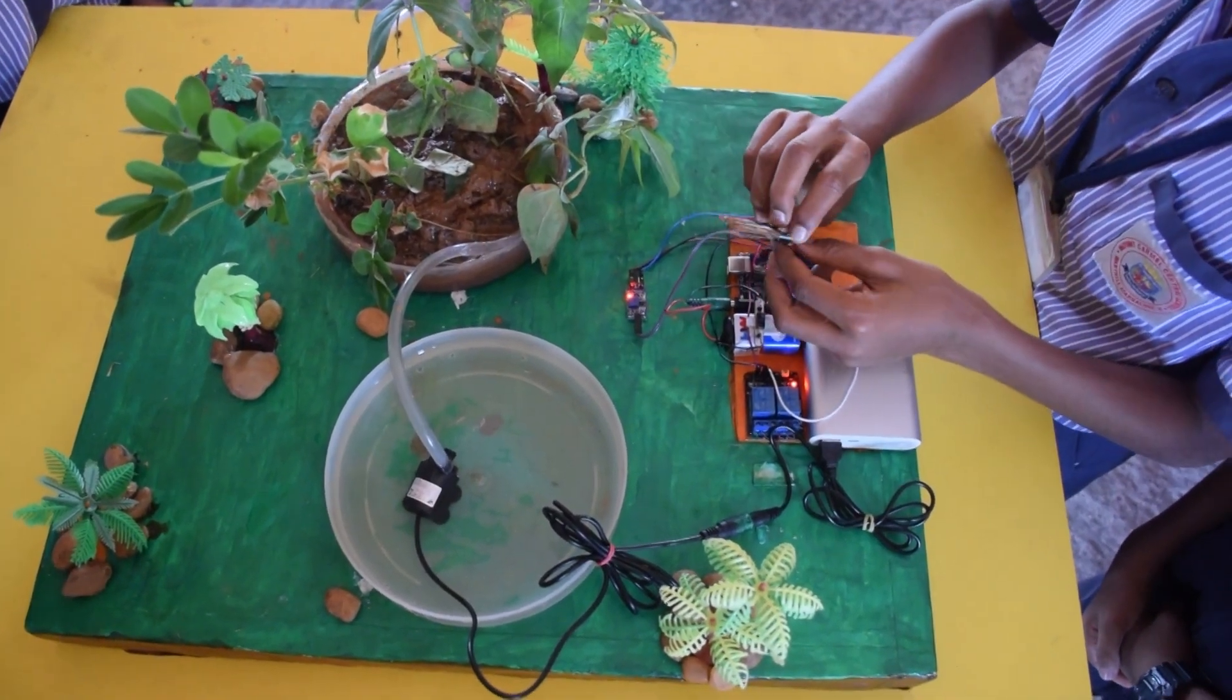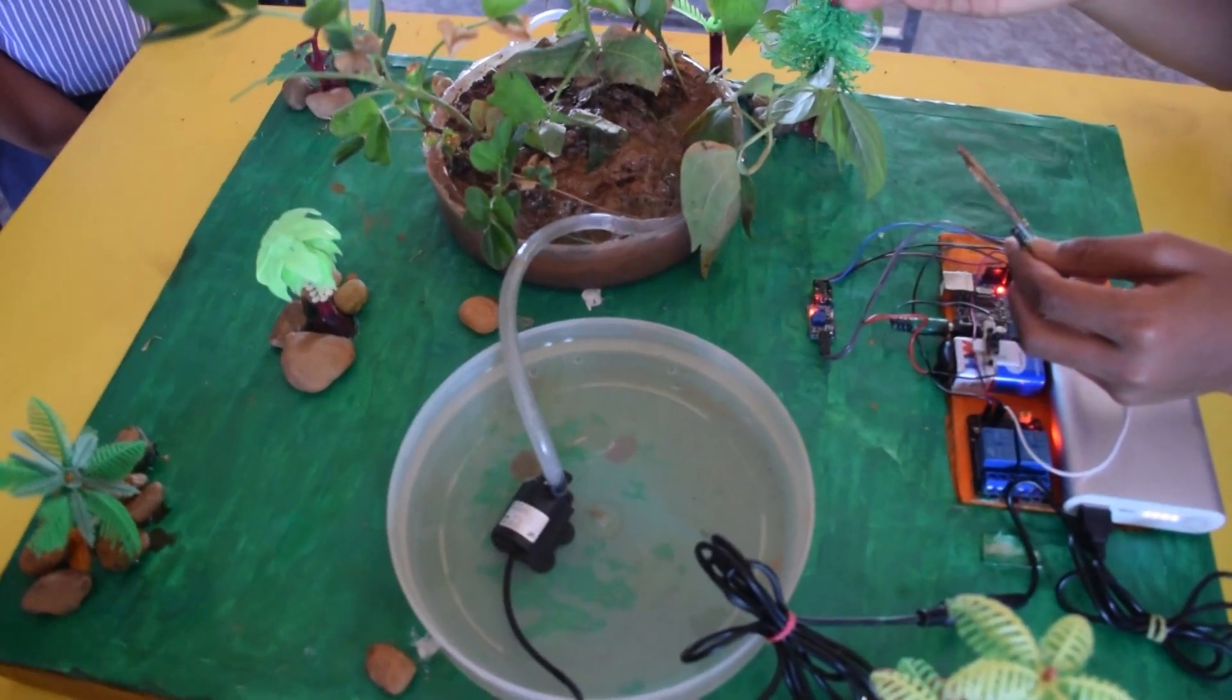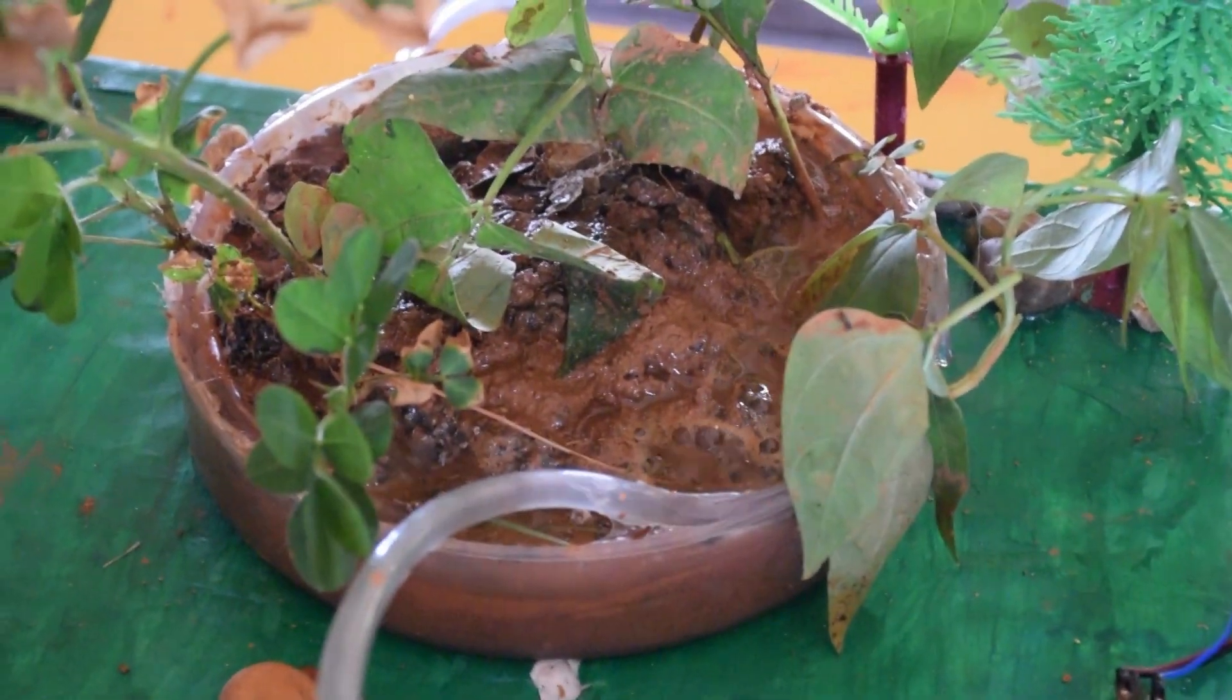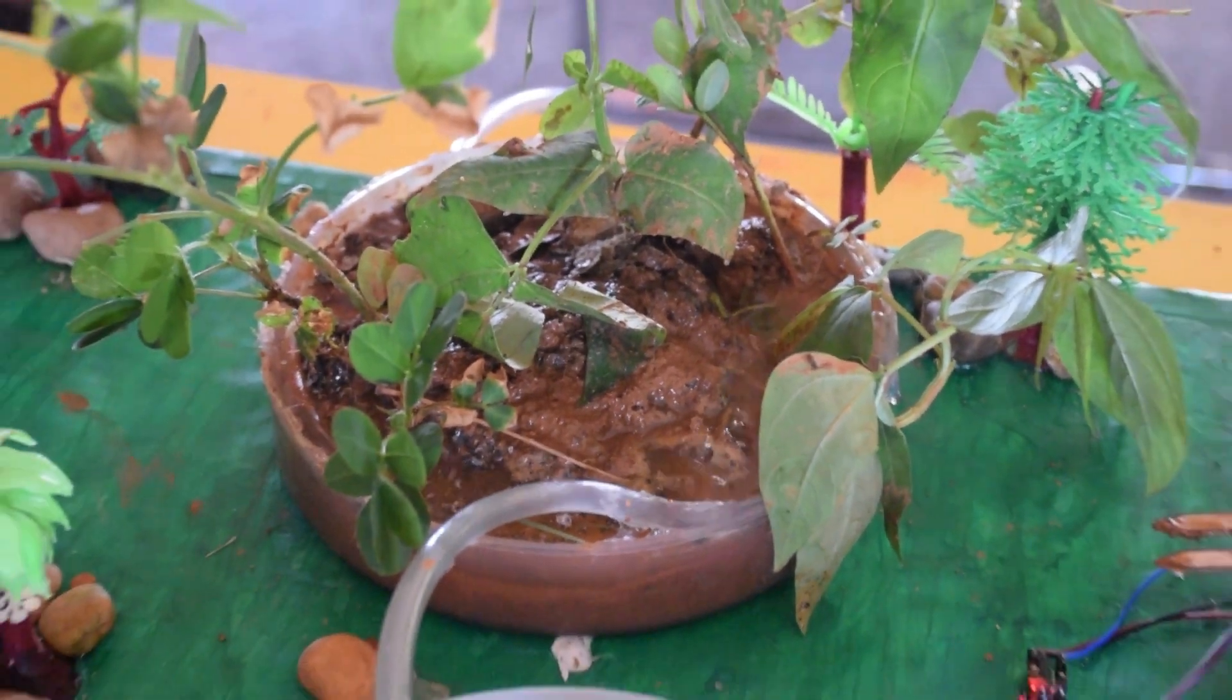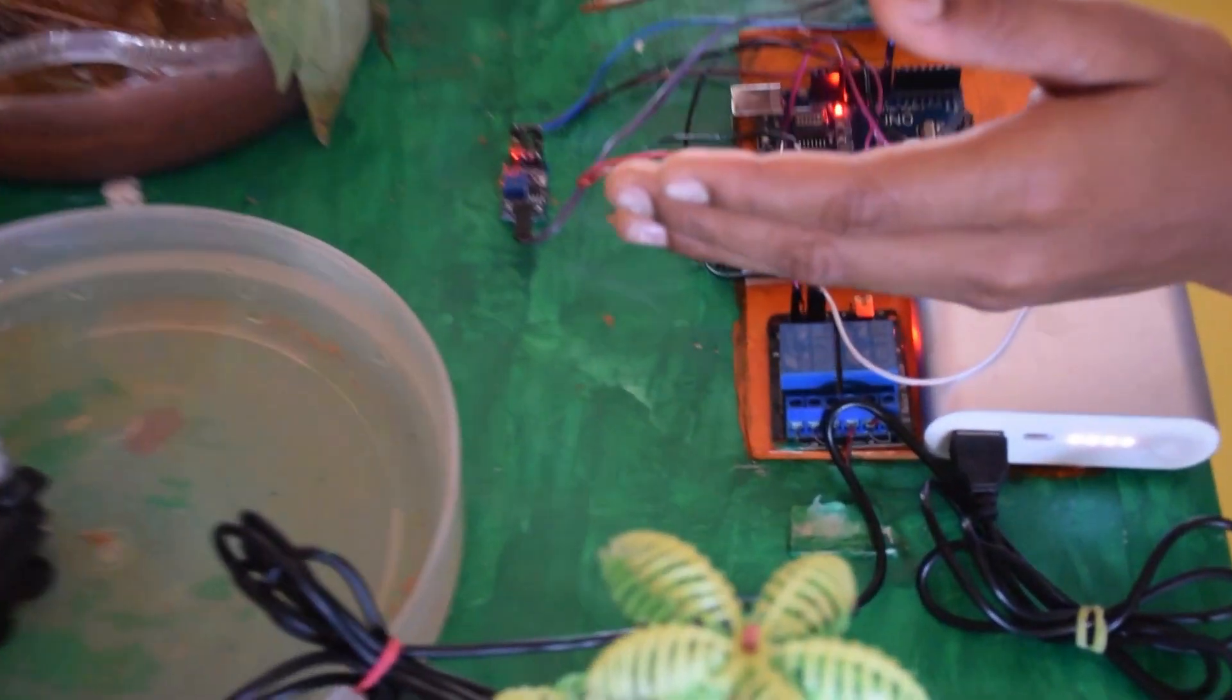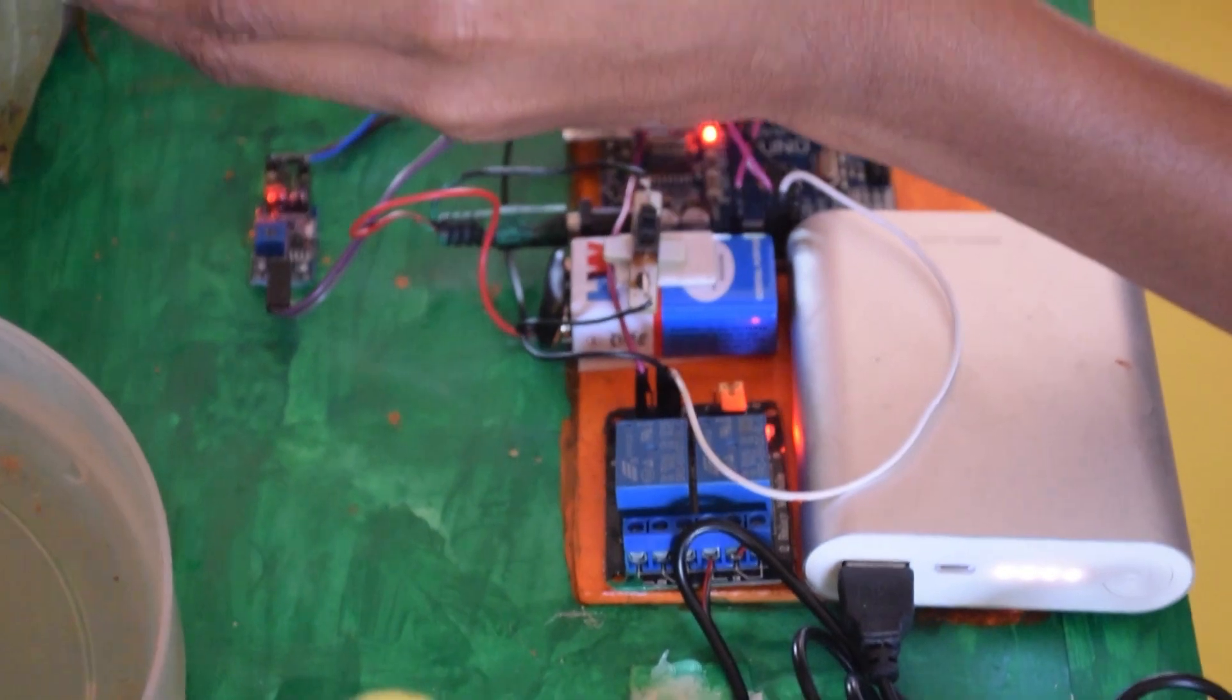When I remove the moisture sensor from the fields, it sends a signal to the Arduino that the field is dry, which then sends the signal to the relay to turn on the pump which then irrigates the fields.